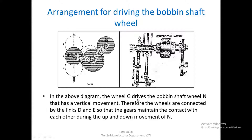In the above diagram, the wheel G drives the bobbin shaft wheel N that has a vertical movement. Therefore, the wheels are connected by the links D and E so that the gears maintain contact with each other during the up and down movement of N. If this particular link as well as this particular wheel were not there, then N would have easily lost contact with G. As N is moving upwards, it will lose contact with G and the speed that needs to be transmitted from G to N will never be passed on.